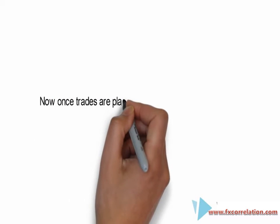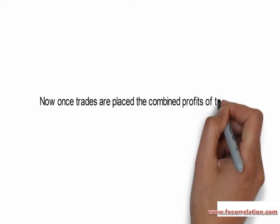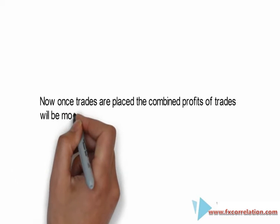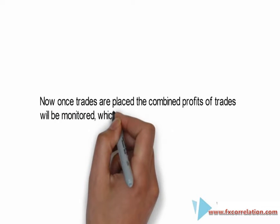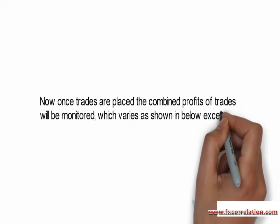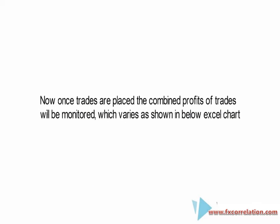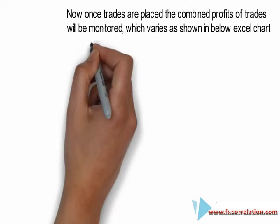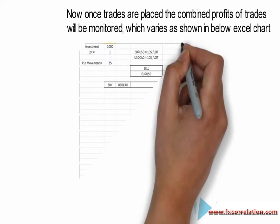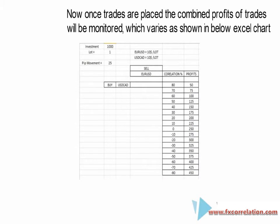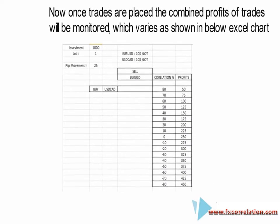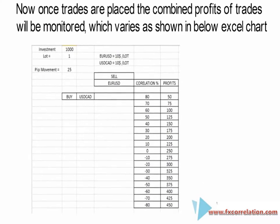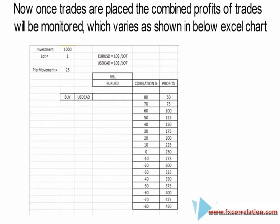Once the trades are placed, the combined profits of the trades will be monitored, as shown in the Excel chart below. Here is an Excel chart where one lot is considered with a pip move of 25 pips — EURUSD vs USDCAD. As you can see, as the correlation moves into the negative, the profits keep increasing.